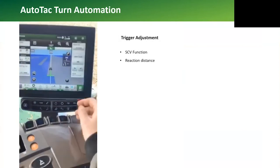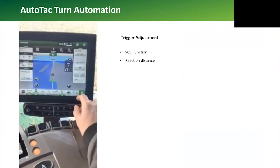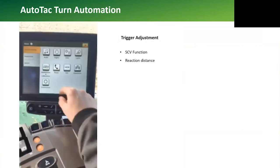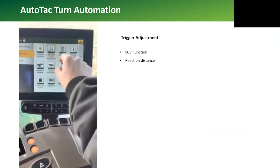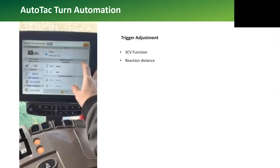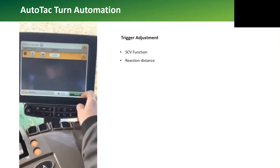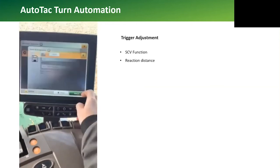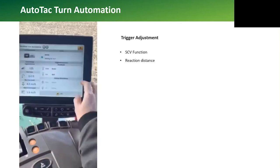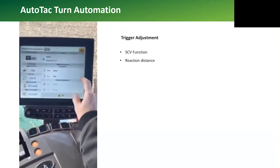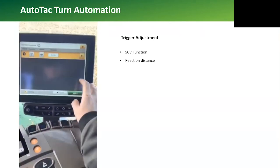To activate Autotrack turn automation, we just need to start driving and press the Autotrack resume button on the armrest. We can adjust the triggers and the reaction distance on the fly. The reaction distance can be adjusted to start the triggers sooner or later as we cross the headland boundary.